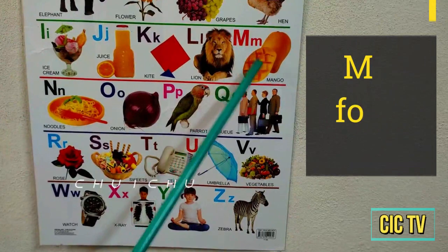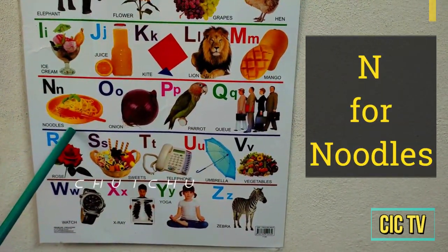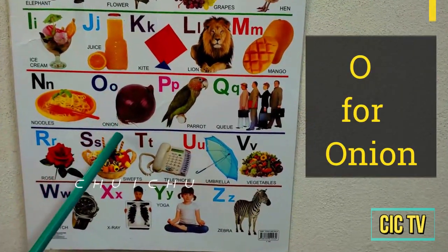M for mango, N for noodles, O for onion.